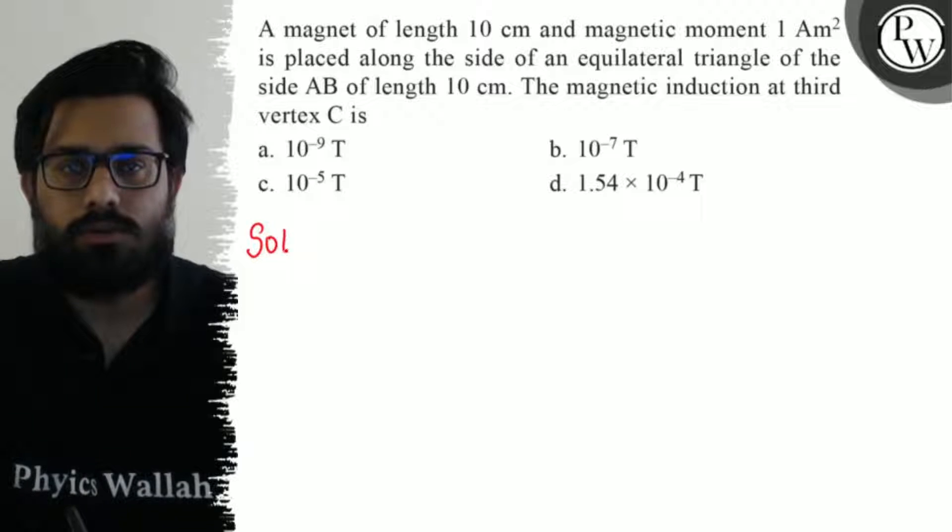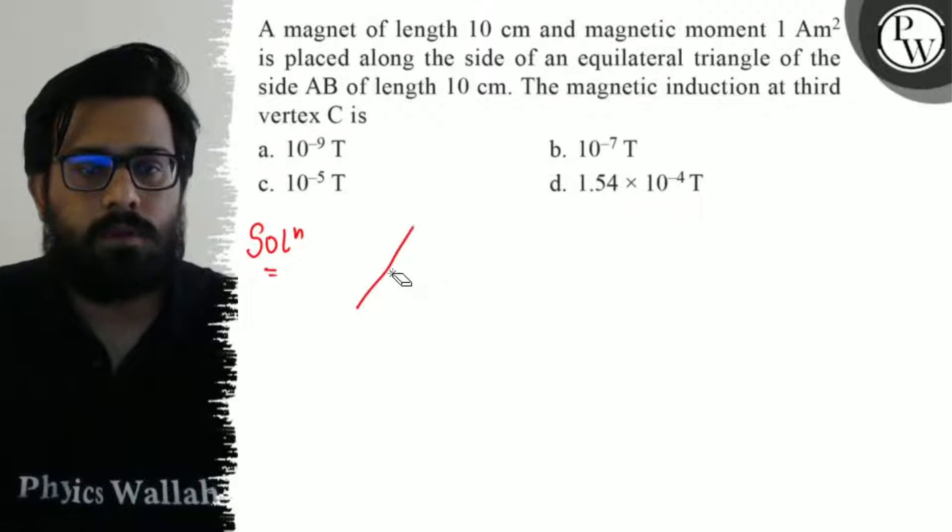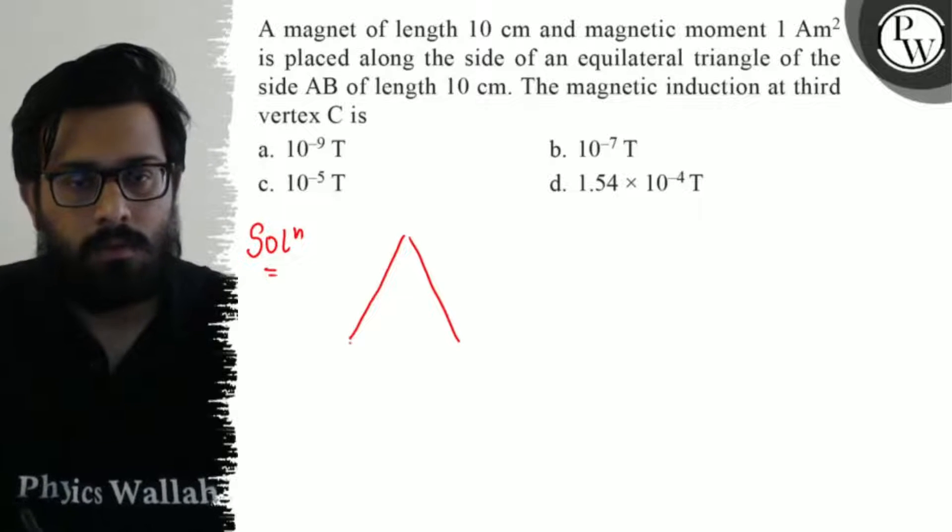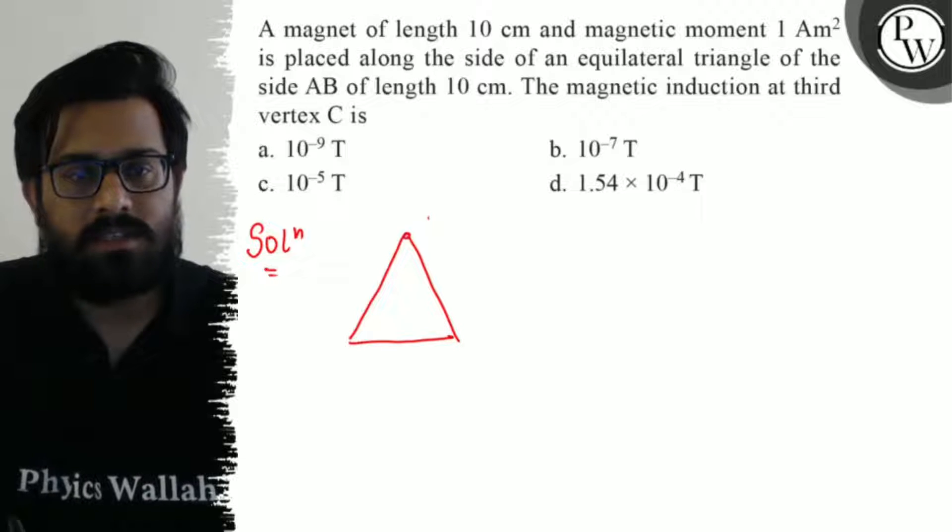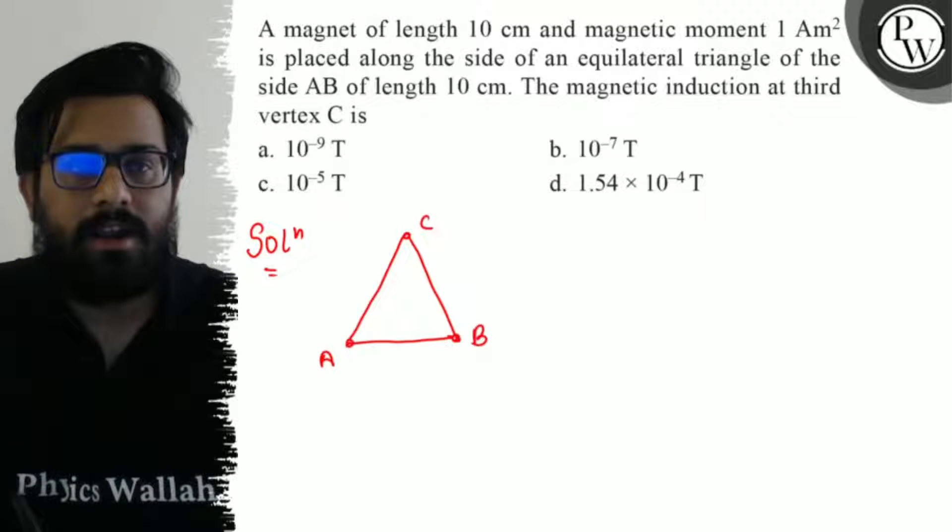So here in this portion, it is saying that we have an equilateral triangle. So let me draw it. This is your vertex C, this is the vertex A and vertex B. And the bar magnet is placed along AB.